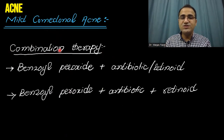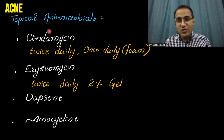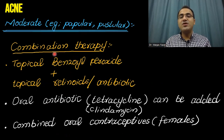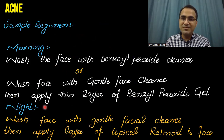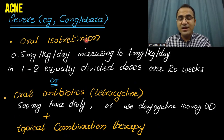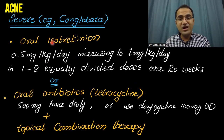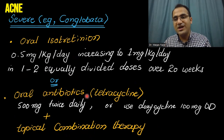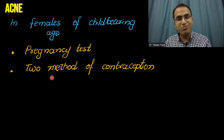Either topical retinoid or benzoyl peroxide can be used, or combination therapy. Topical antimicrobials can also be used for acne. For moderate papular or pustular acne, combination therapy is used and oral antibiotic can also be combined. For severe acne, topical combination therapy is combined with either oral isotretinoin or oral antibiotics. In females of childbearing age, pregnancy tests and two methods of contraception must be used.